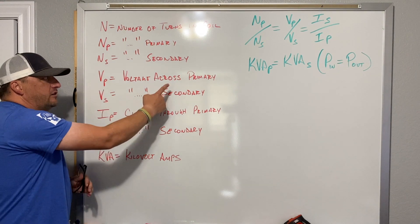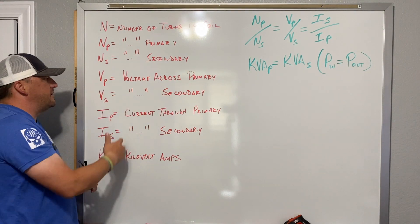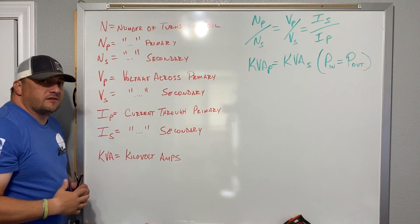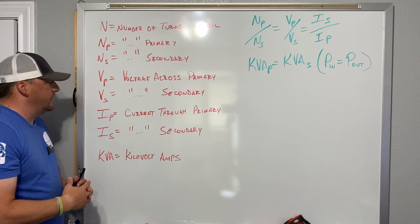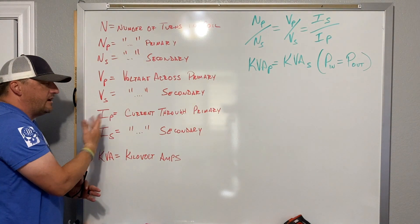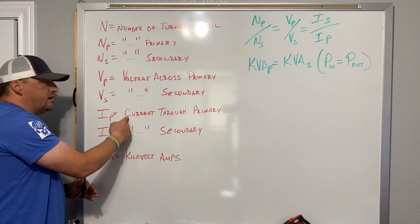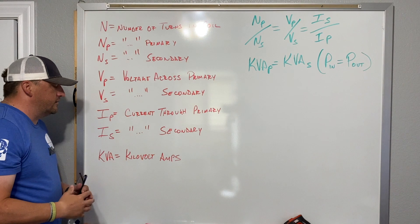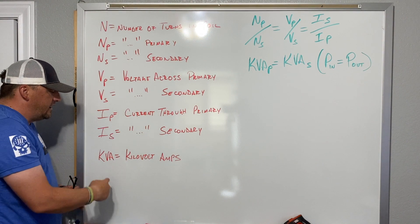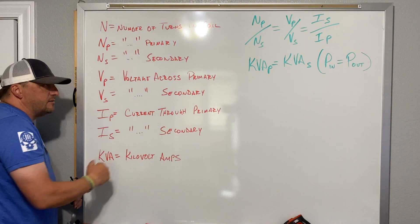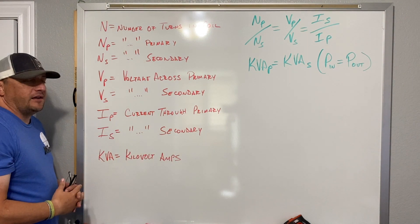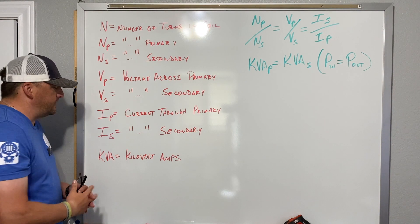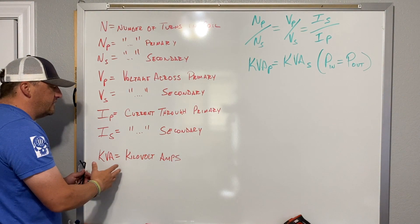VP is voltage across the primary, VS is voltage across the secondary. IP and IS are current through the primary and current through the secondary. And KVA is going to be kilovolt-amps — that's what that stands for.